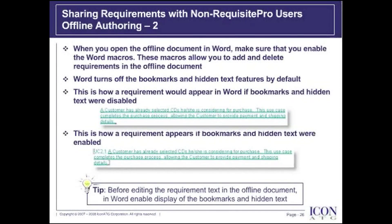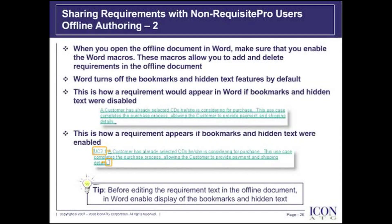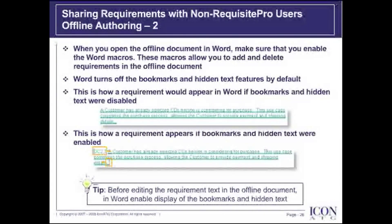On the slide, I've now shown how Word displays the same requirement with bookmarks and hidden text enabled — the tagged requirement highlighted in orange is now fully displayed. To wrap up: all users do not need a copy of Requisite Pro if you just want to make a document available for viewing. If you allow users to work on a requirement document offline, you must preserve the integrity of your tagged requirements by taking the document offline prior to working on it.